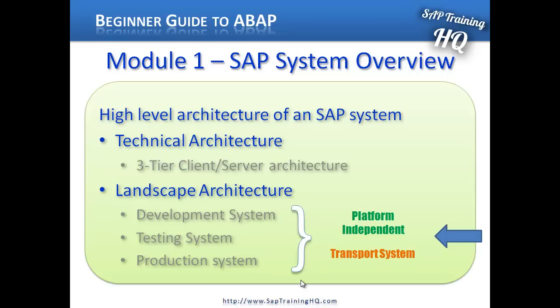The three systems — development, testing, and production — are normally a minimum. It can increase to four systems; maybe you want a training system, or you've got multiple projects running at the same time giving you two different development systems, two different test systems, and maybe a consolidation system before changes reach production. This is all dependent on the company you're working at, but one thing that is common is that each system in your landscape architecture will have its own application server and its own database server.